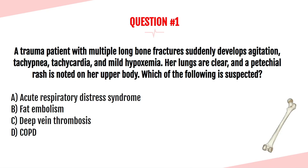Question number one. A trauma patient with multiple long bone fractures suddenly develops agitation, tachypnea, tachycardia, and mild hypoxemia. Her lungs are clear, and a petechial rash is noted on her upper body. Which of the following is suspected? A, acute respiratory distress syndrome; B, fat embolism; C, deep vein thrombosis; or D, COPD?